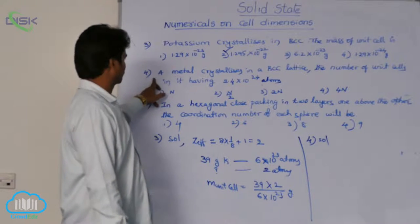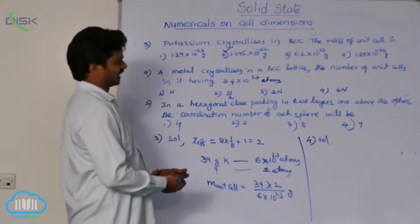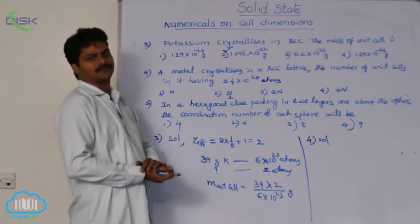Solution for this fourth question. See the question first. A metal crystallizes in a BCC lattice. The number of unit cells in it having 2.4 into 10 power 24 atoms.